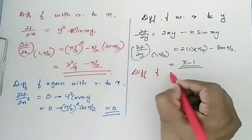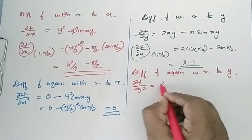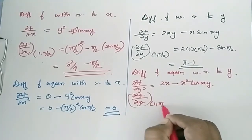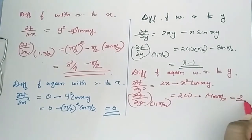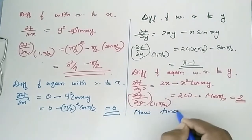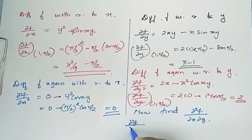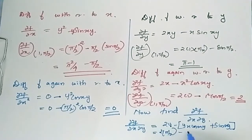Differentiate f again with respect to y. ∂²f/∂y² = 2x − x²·cos(xy). At (1, π/2): 2·1 − 1²·cos(π/2) = 2. Now find ∂²f/∂x∂y = 2y − xy·cos(xy) − y. At (1, π/2): 2·(π/2) − cos(90°)·... = π − 1.